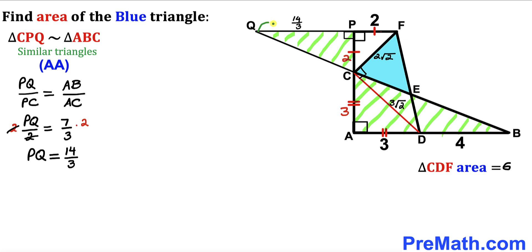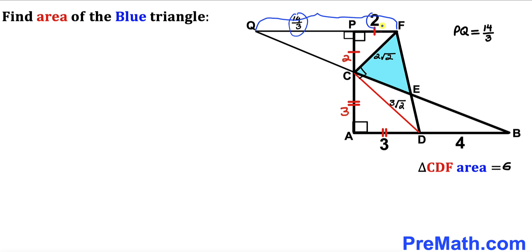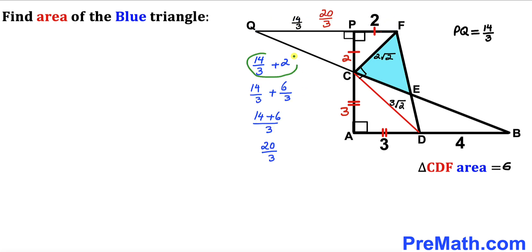So segment PQ is 14/3. Now, PQ is 14/3 and segment PF is 2, so the whole QF length is going to be the sum of these two numbers: 14/3 plus 2, which turns out to be 20/3. So QF length is 20/3.